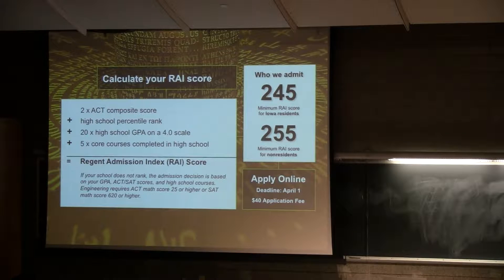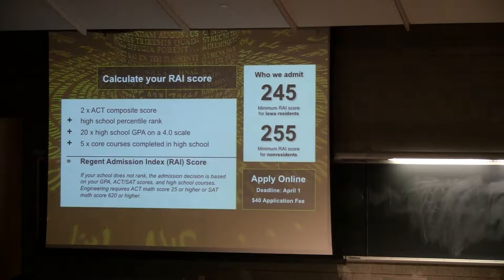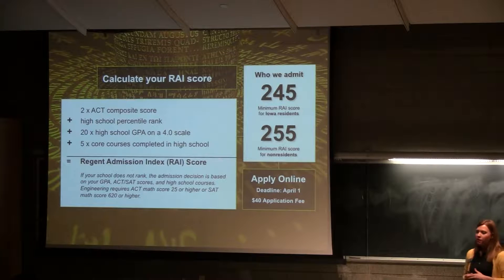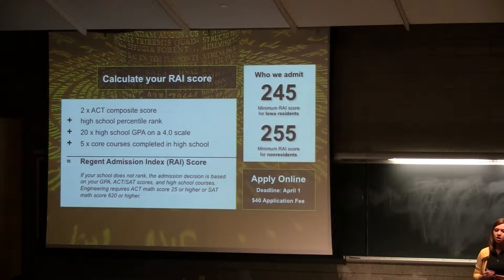So all we're going to do is do an individual review or a holistic review. We're going to still look at the same factors minus the class rank. When we do use the formula for everybody else, you need a 245 or above — because you are from the state of Iowa, you're automatically admitted as long as you have the core classes done.